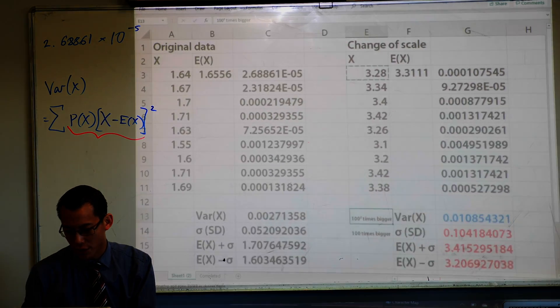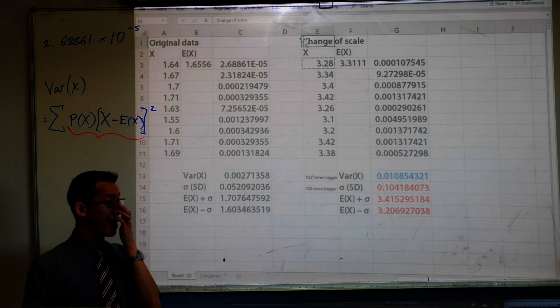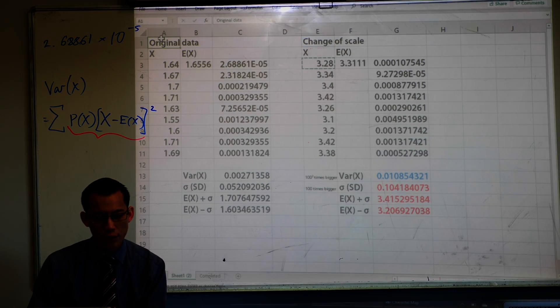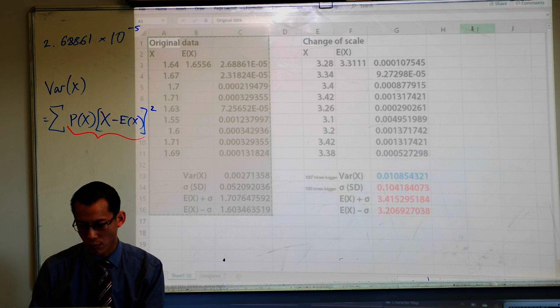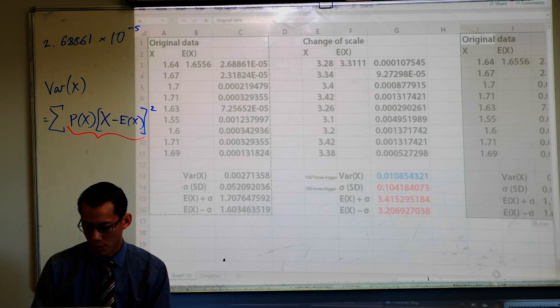Now one last thing we're going to do, just see how we changed the scale, right? What I'd like to do is go back to your original data and let's copy that one last time and let's use some space over here on the right to have one more set here.